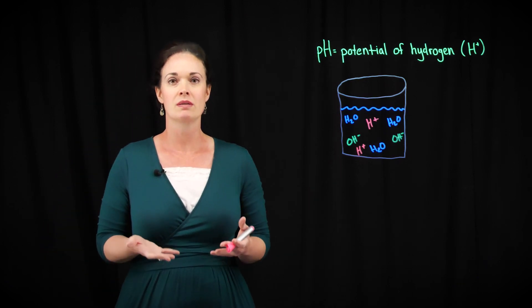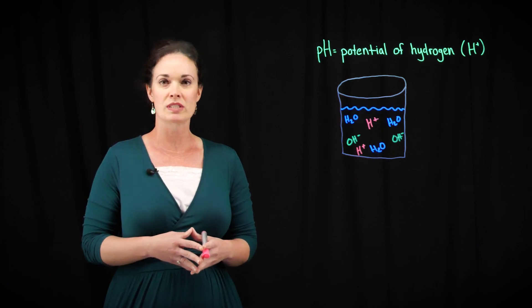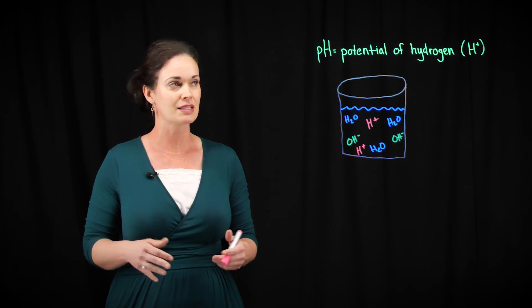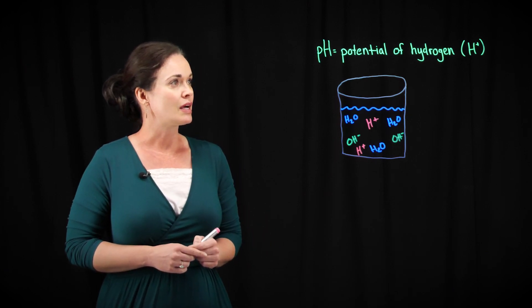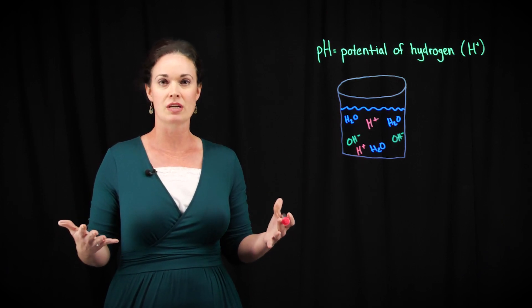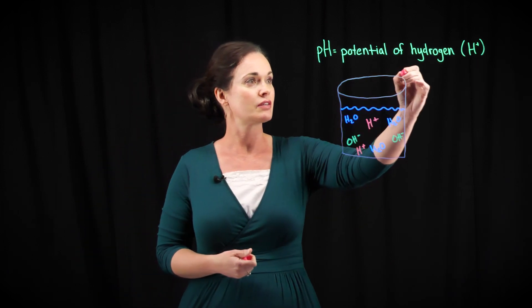pH stands for potential of hydrogen, and hydrogen of course is that atom that most often exists as an ion. When we measure pH, basically we're measuring how much hydrogen ion there is, and specifically how much free hydrogen.